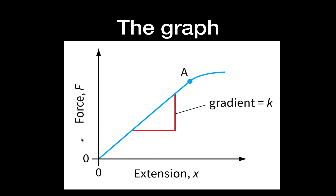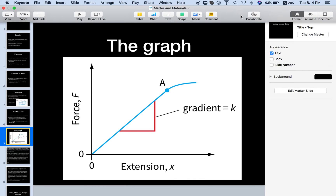On the graph, we have force on the y-axis and extension on the x-axis. A graph obeying Hooke's law is a straight line from the origin, extending to point A, after which it becomes curved and irregular. Point A is the elastic limit. If the spring is stretched beyond this limit, it becomes deformed and no longer follows proportionality. The gradient of the straight line gives us a value k.